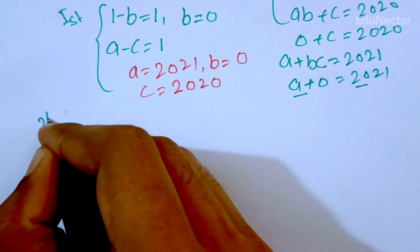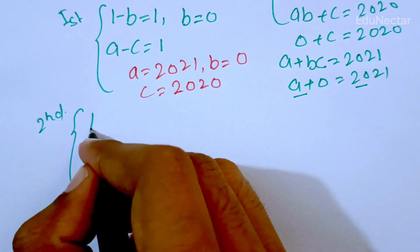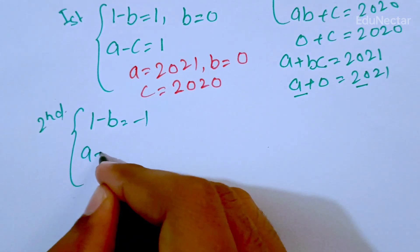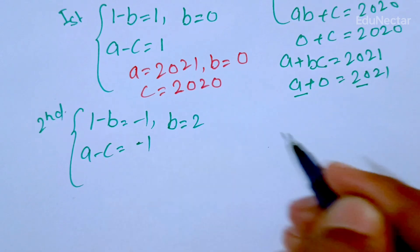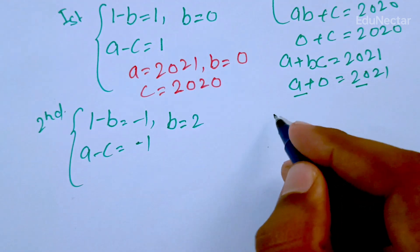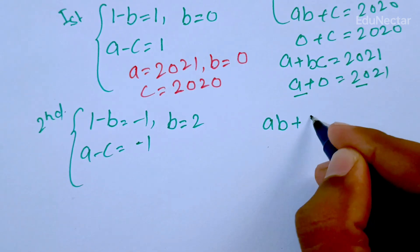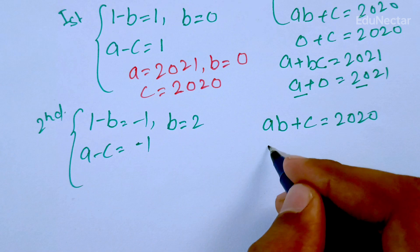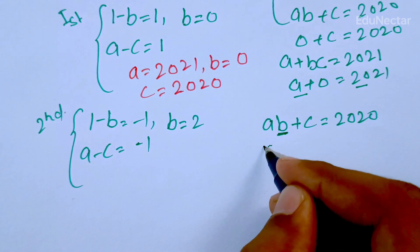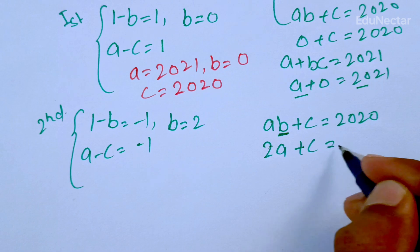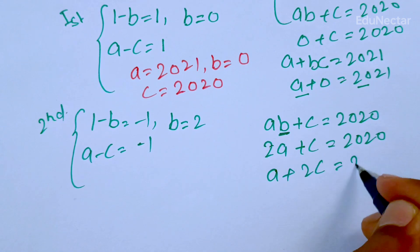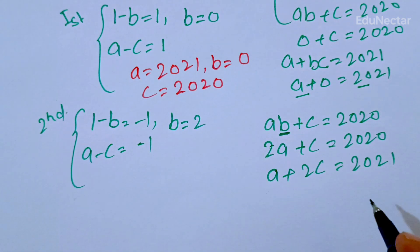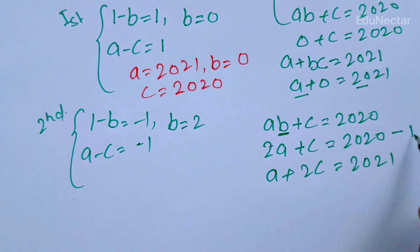Now I am going to solve the second case. Second case: (1 minus b) equals minus one, so b equals 2. And (a minus c) equals minus one. I put b equals 2 into equation one: ab plus c equals 2020, which becomes 2a plus c equals 2020. The other equation becomes a plus 2c equals 2021.